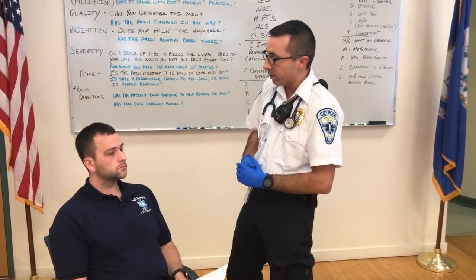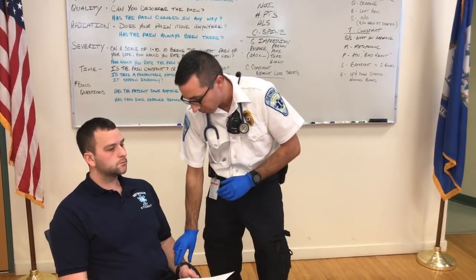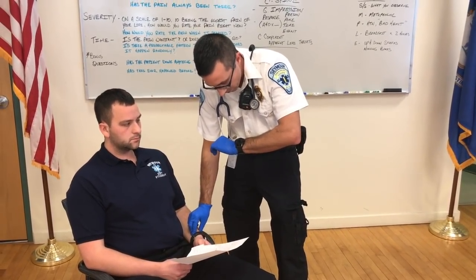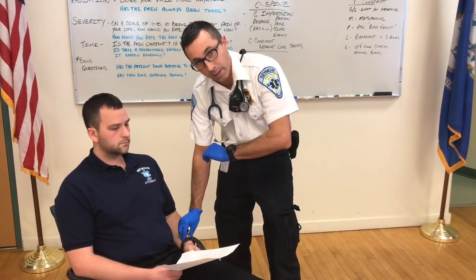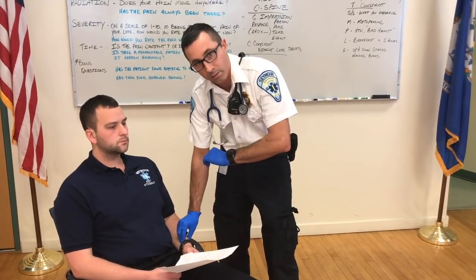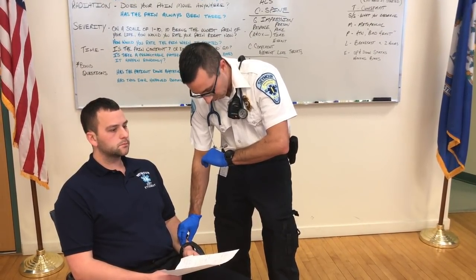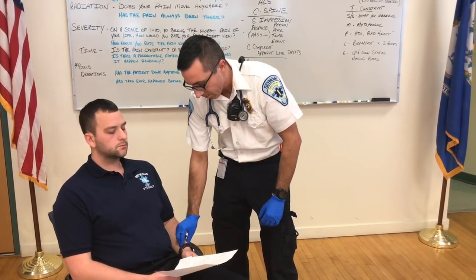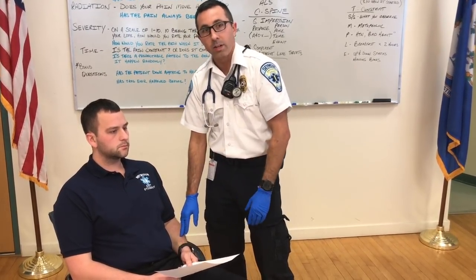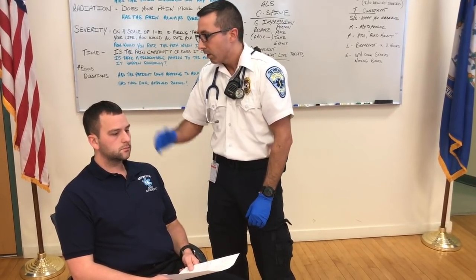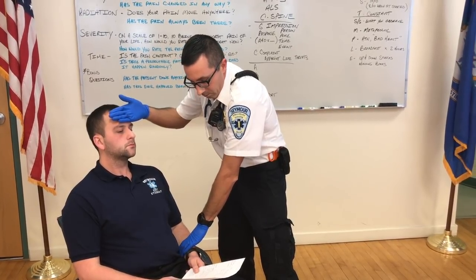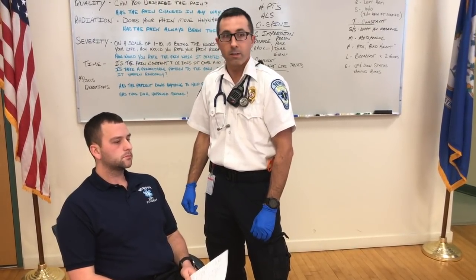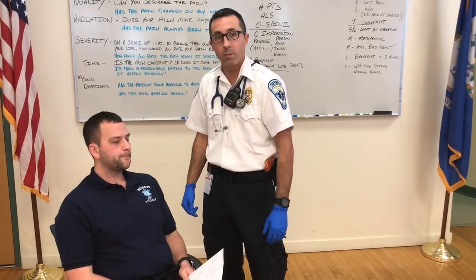Moving down to circulation, I check three things. I assess the radial pulse since he's conscious — rate, rhythm, and quality. Heart rate is 120, weak. I check head to toe for any major bleeds — none found. Skin color, temperature, and condition: pale, cool, and clammy. Based on that, the patient is exhibiting signs and symptoms of shock, so I treat him with a blanket to keep him warm.